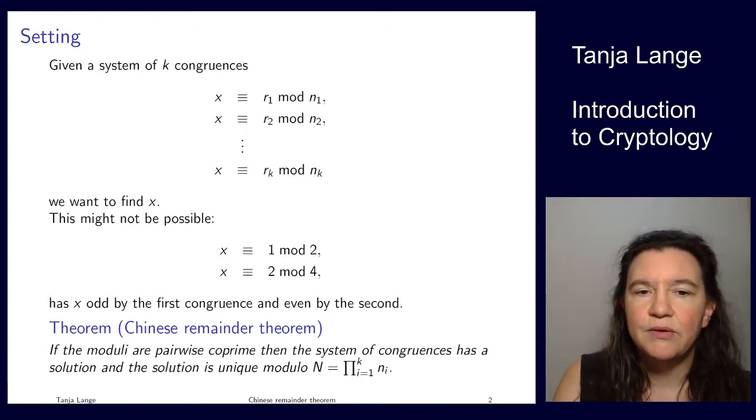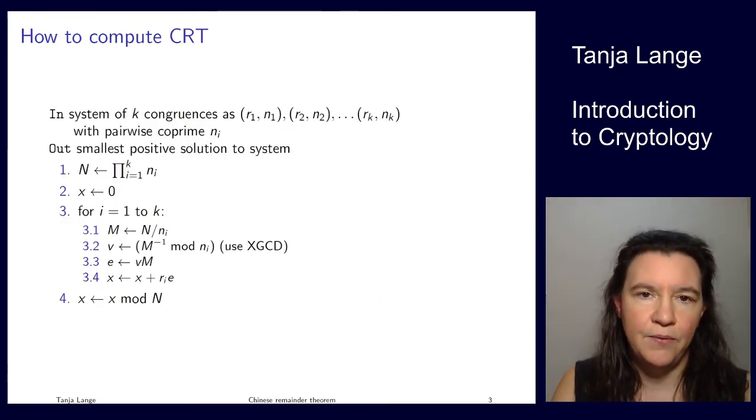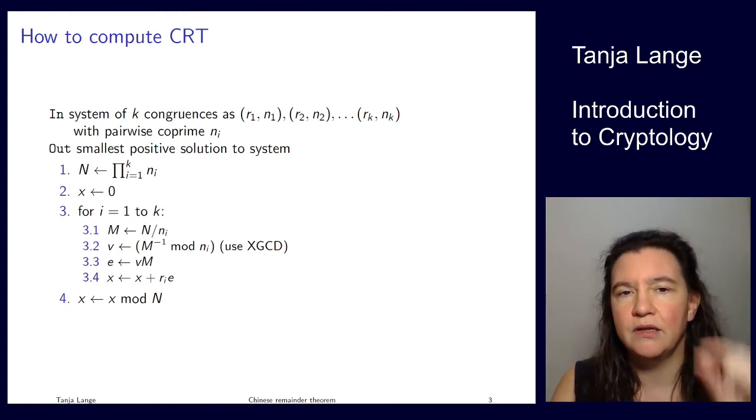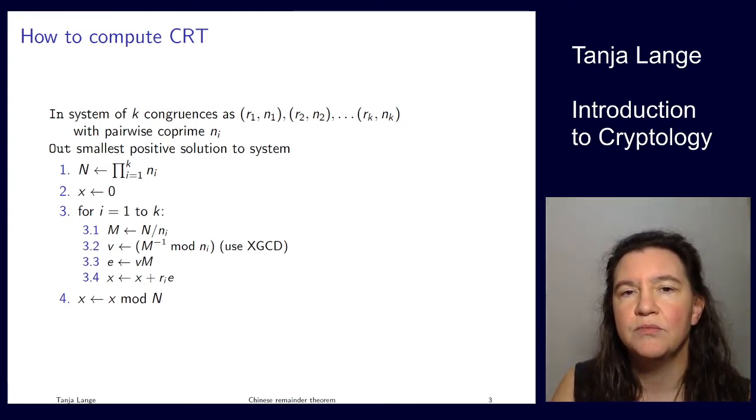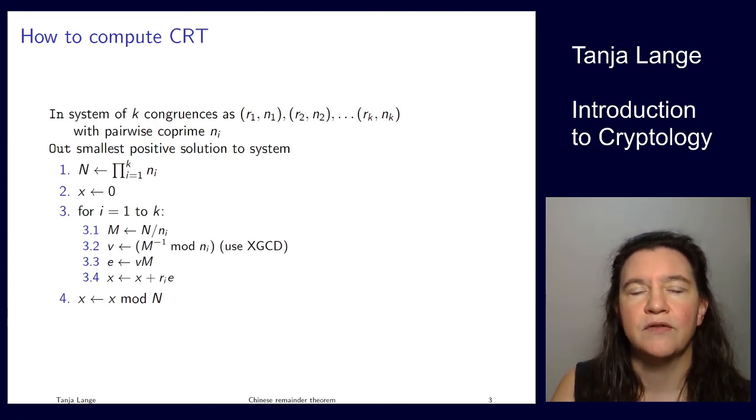Now that we have the theory, the Chinese Remainder Theorem can actually be put into an algorithm. We can compute this in practice, and here is how. We're given this system of k congruences, and now I'm putting the remainder r and the modulus n there, and we are ensured that all these moduli are pairwise coprime. We want to find the smallest positive solution to the system.